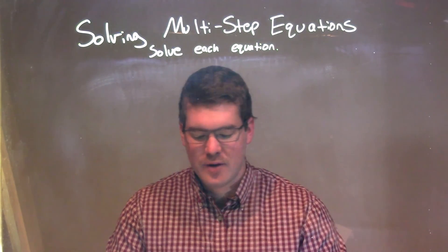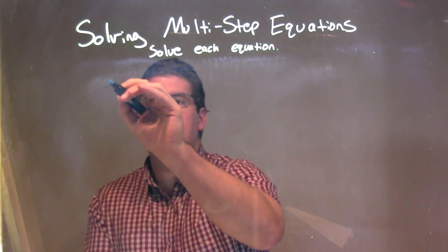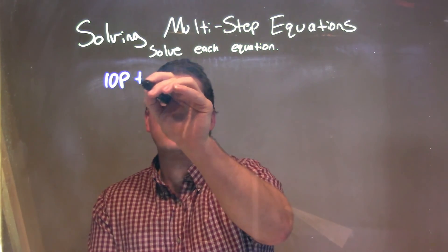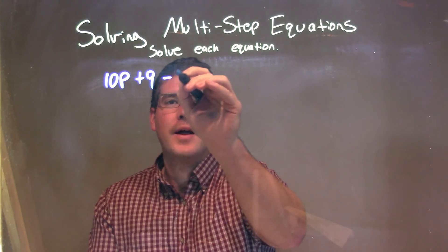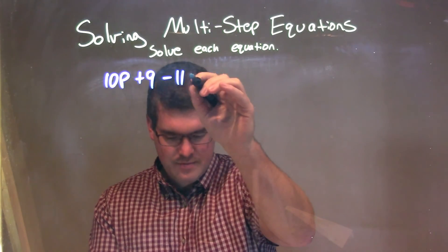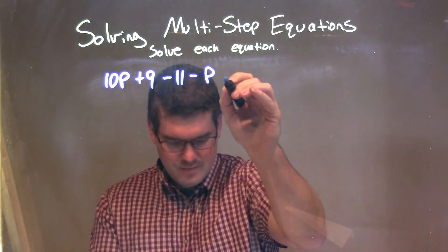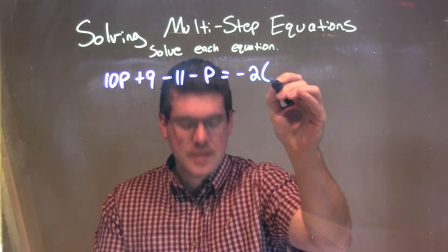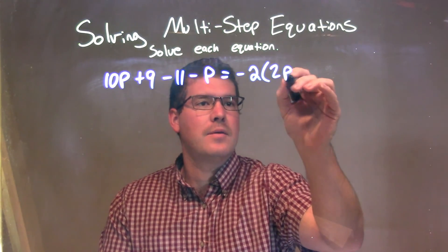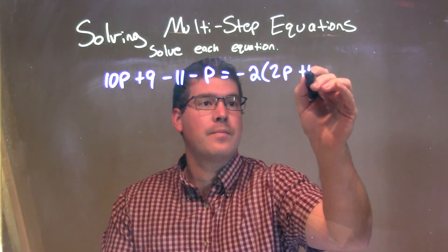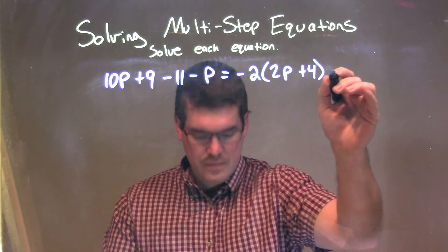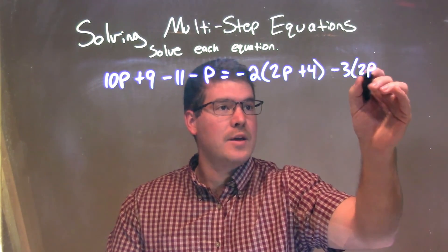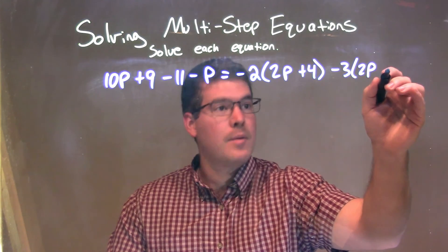If I was given this equation: 10p plus 9 minus 11 minus p is equal to negative 2 times 2p plus 4, minus 3 times 2p minus 2.